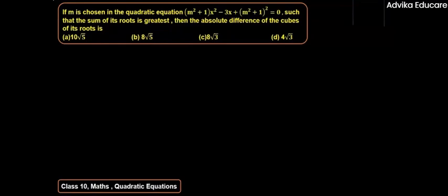Hello students, today we will be solving a problem of class 10 math from the chapter quadratic equations. The question states that if m is 2n in the quadratic equation (m² + 1)x² - 3x + (m² + 1)² = 0, such that the sum of its roots is greatest, then the absolute difference of cubes of its roots is — options: 10√5, 8√5, 8√3, or 4√3.